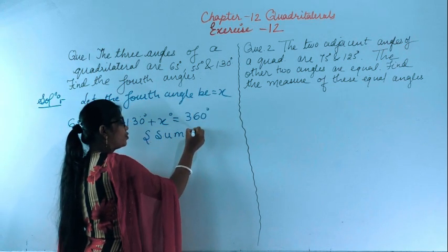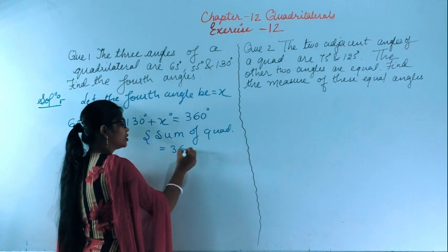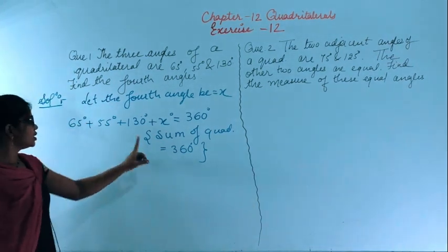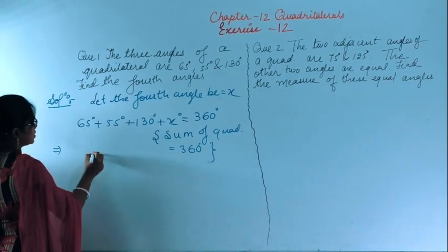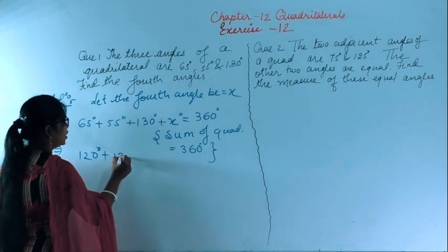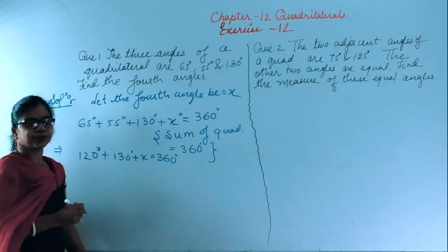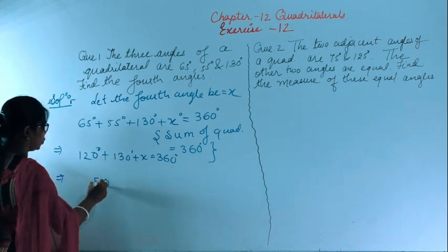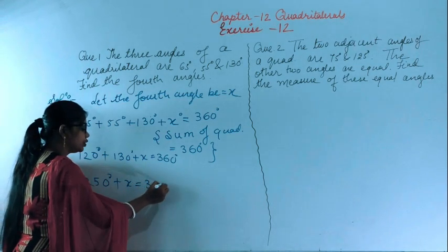Writing: sum of angles in a quadrilateral equals 360 degrees. So 65 plus 55 plus 130 plus x equals 360 degrees. Adding the known angles: 250 degrees plus x equals 360 degrees.